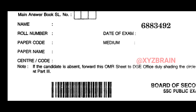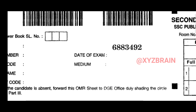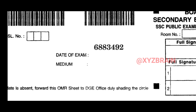For example, the paper name could be Telugu, English, Hindi, General Science, or Maths. You write the paper name, and that is called the paper code. There is also a center code — you can get the center code in the exam hall and enter it here.